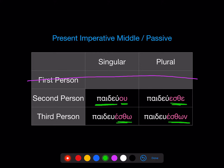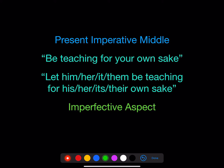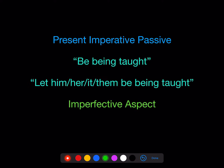So, paideu — 'be teaching for your own sake.' In the third person, 'let him, her, it, them be teaching for his, her, its, their own sake.' For example, 'let him be teaching for his own sake,' if you think it's middle. Again, with imperfective aspect.